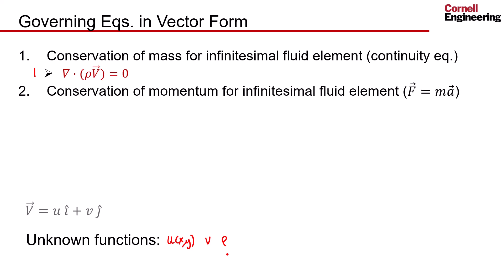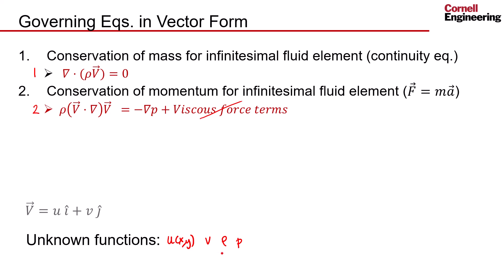Then we have conservation of momentum for an infinitesimal fluid element — that's F = ma applied to the infinitesimal fluid element. We will ignore the effect of viscosity, so in the Fluent solver we will set the flow as inviscid with no viscous terms. This equation introduces an additional unknown, p as a function of x and y. There are two scalar equations — F = ma in the x direction and F = ma in the y direction — so at this point we have three equations but four unknown functions, which means we need to bring in an additional equation.